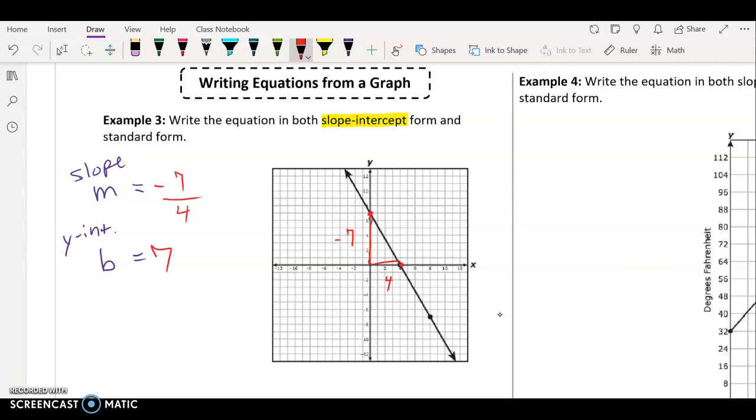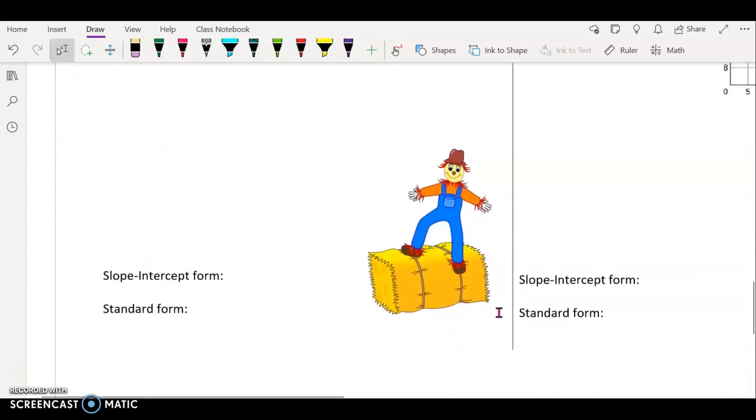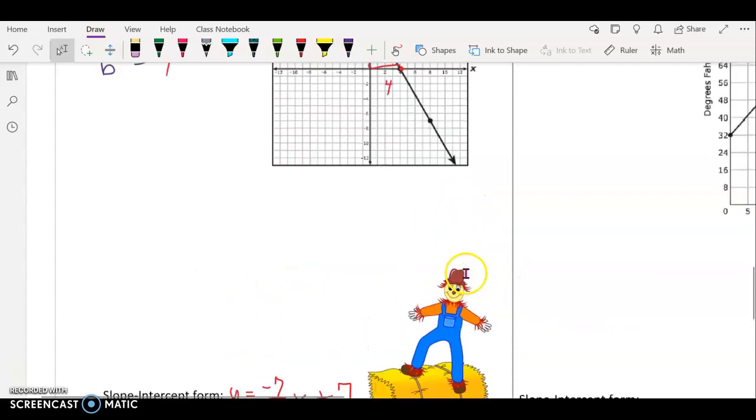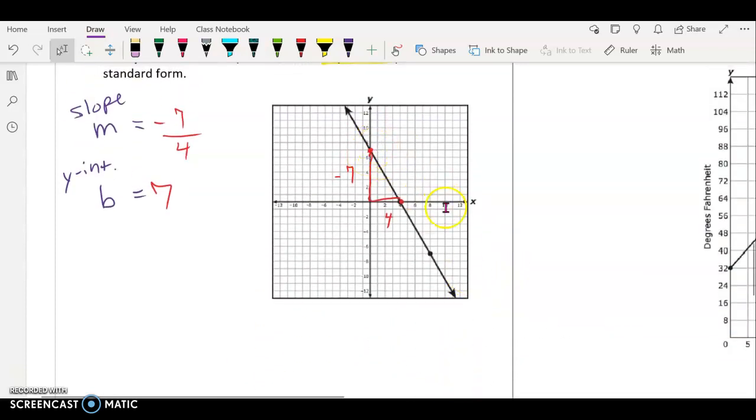And I'm going over four, so our slope is negative seven fourths. It does not reduce anymore - there is no number that both seven and four are divisible by. So now we can write our slope intercept form. Let's go ahead and write it: y equals mx plus b. We have our slope here in front of the x where it should be, and then our y-intercept right next to it. We put a plus because it is a positive y-intercept.